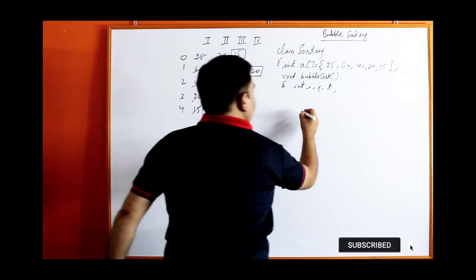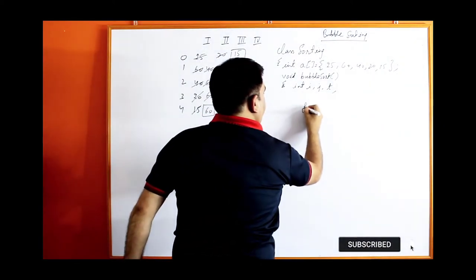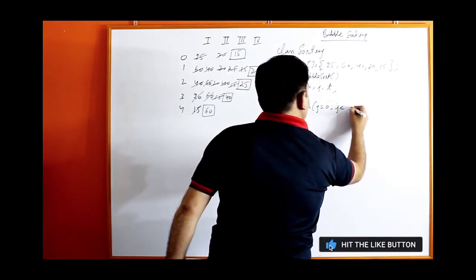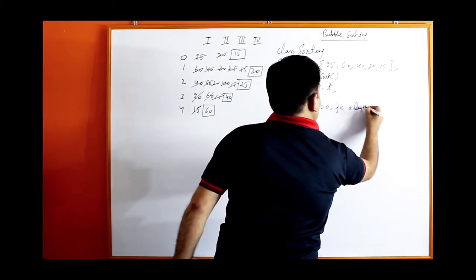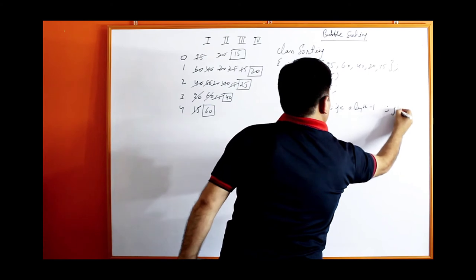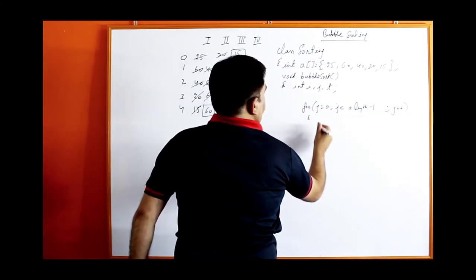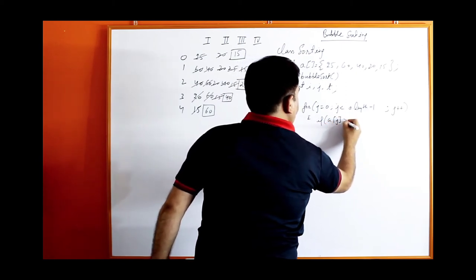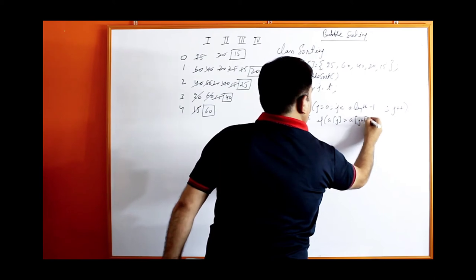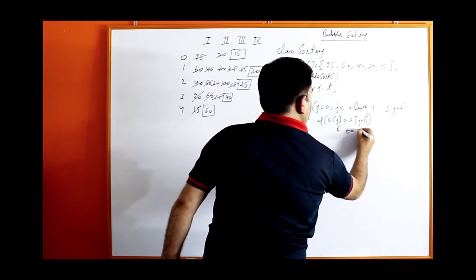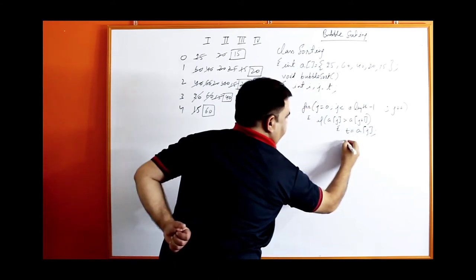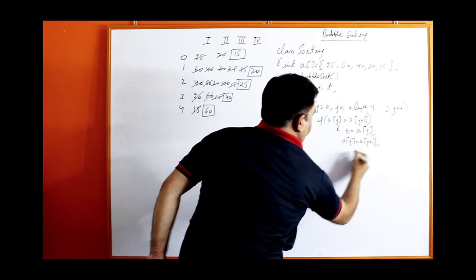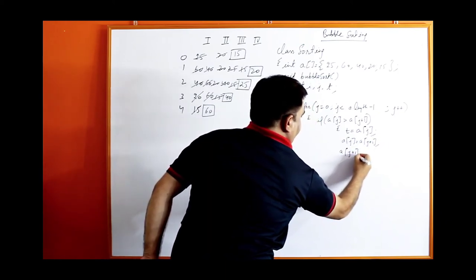Try to understand how I am making nested loops. For J equal to 0, J is less than A.length minus 1, J plus plus. If A[J] is greater than A[J+1], then swap. The swap code is: T equal to A[J], A[J] equal to A[J+1], and A[J+1] equal to T.